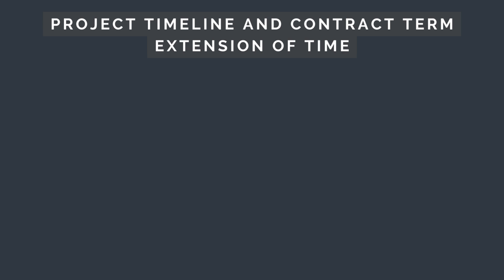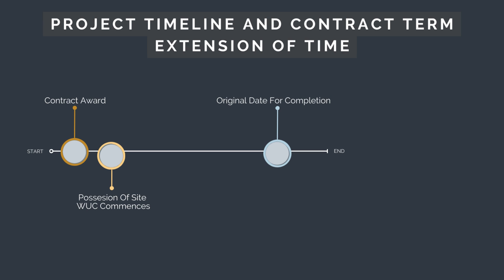Next, let's talk about what an extension of time is. In the next diagram, we see a project start date with an original date for practical completion. Say there is a contract to build a bridge, with the contractor originally contracted to complete the bridge on the 1st of June. This is the original date for practical completion.